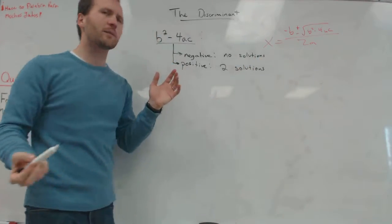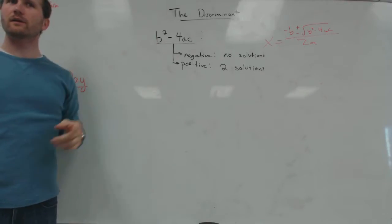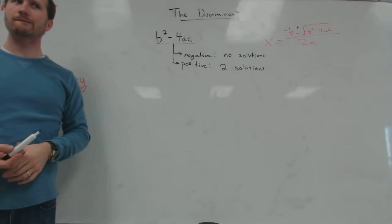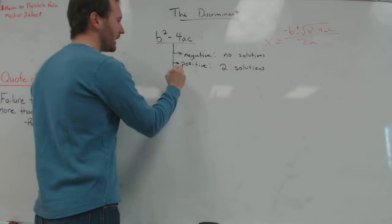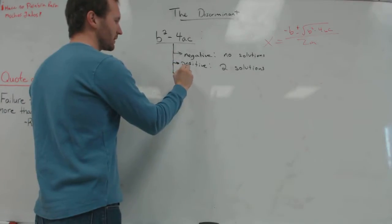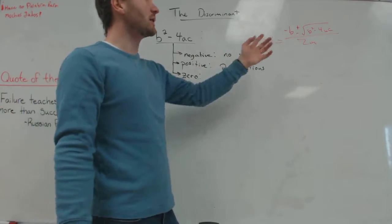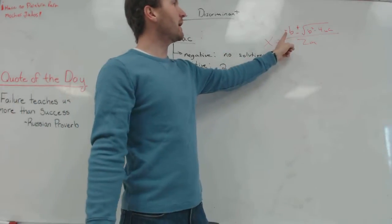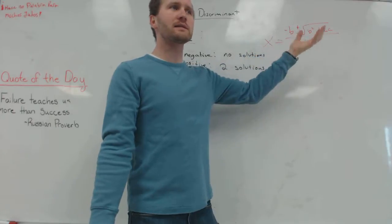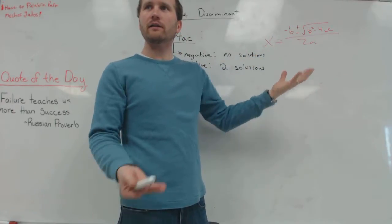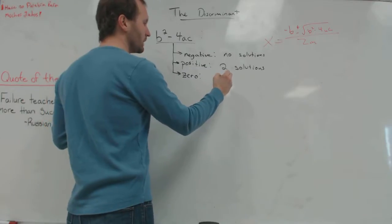Are there any other possibilities besides negative or positive? Yes — what if it's zero? If the discriminant is zero, you'd have negative b plus or minus zero, and plus zero and minus zero are the same thing, so you end up with just one solution.